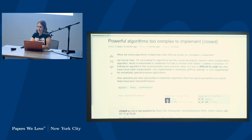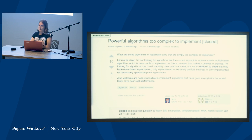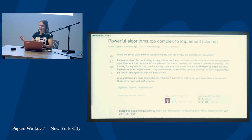If you search for Chazelle's algorithm on Google, you'll find an amazing piece of computer archaeology from the early days of Stack Overflow — it's the number one answer to "powerful algorithms too complex to implement." It is a very beautiful algorithm, but it doesn't really make sense to implement it because there's a much easier approach: define a set of grid points covering the boundaries of your shape and for each point just determine whether it's inside the shape or not. That's a lot easier to implement, and we have the computers to do it. So I don't implement Chazelle's algorithm.